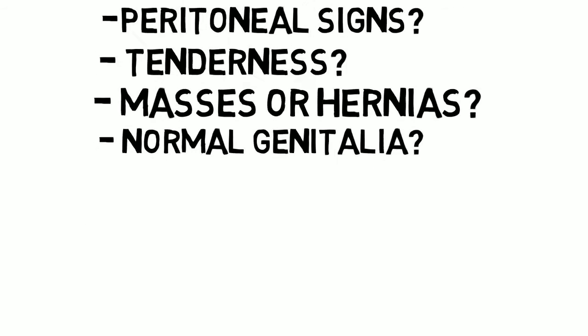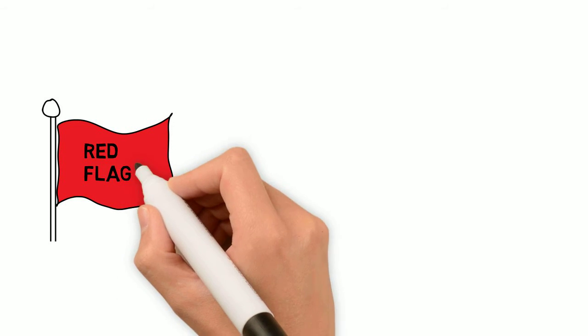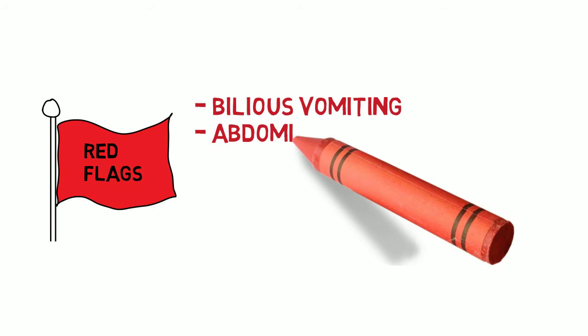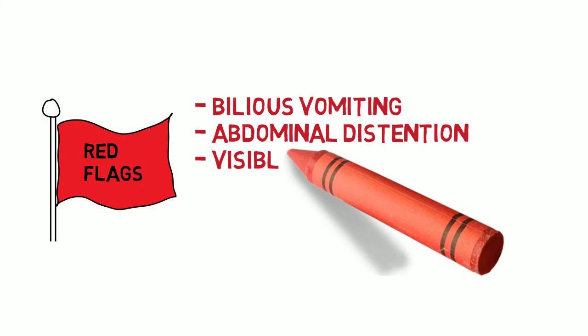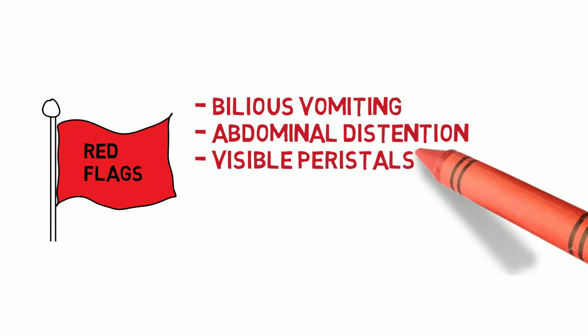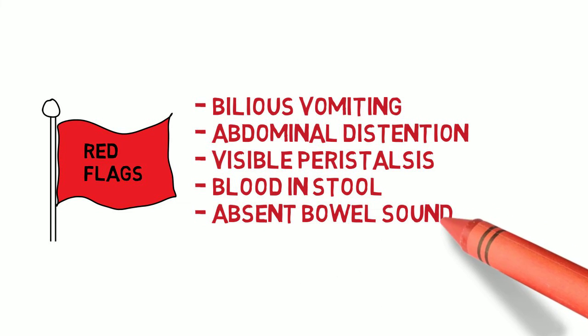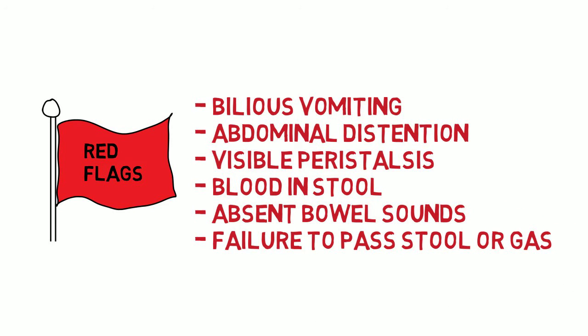What are some red flags on history and physical that should make you think of an obstructive picture? These include bilious or projectile vomiting, abdominal distension, visible peristalsis, blood in the stool, absent bowel sounds, or failure to pass stool or gas at all.